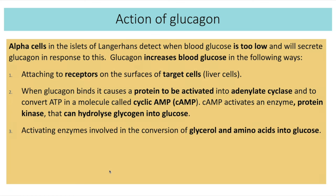Looking at the action of glucagon: alpha cells in the islets of Langerhans detect when blood glucose is too low and secrete glucagon. Glucagon is transported in the blood and attaches to complementary-shaped glucagon receptors on liver cells. When glucagon binds, it activates adenylate cyclase, converting ATP into cyclic AMP. Cyclic AMP then activates a protein kinase enzyme, which hydrolyzes glycogen back into glucose, released back into the blood. Glucagon also activates enzymes involved in converting glycerol from lipids and amino acids from proteins into glucose — a process called gluconeogenesis.